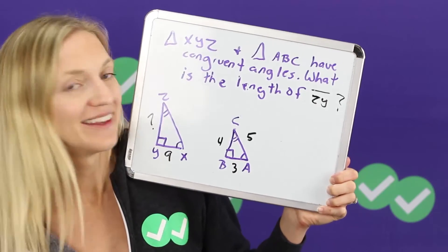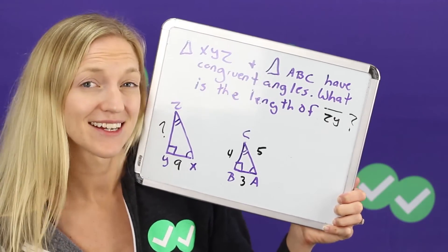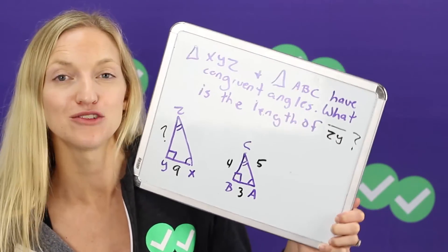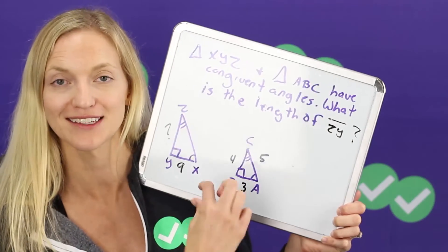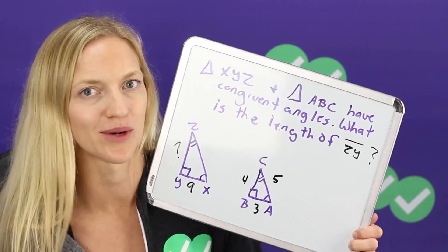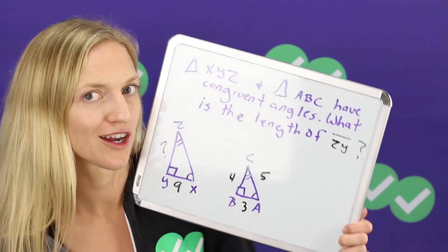Now another thing to note, on the test, on the ACT, they're going to be drawn to scale. So if you're completely lost, at the very least do some estimation on what the side lengths look like and you can probably eliminate some answer choices that are way too big or way too small to work for the proportion.